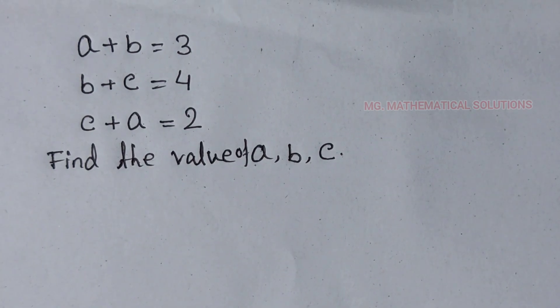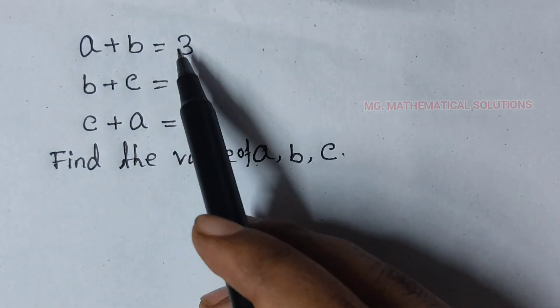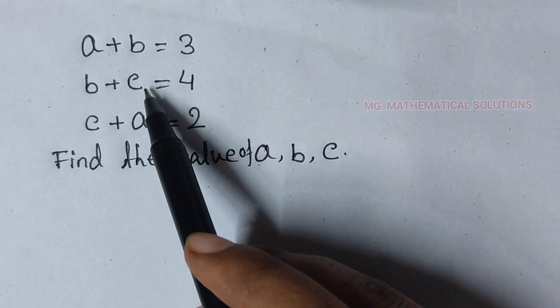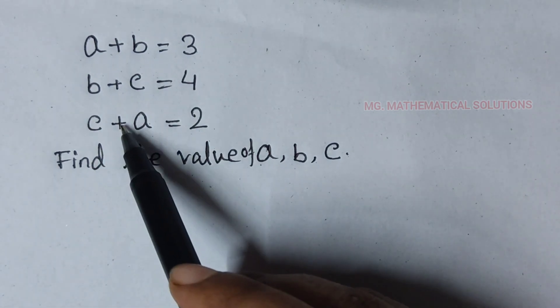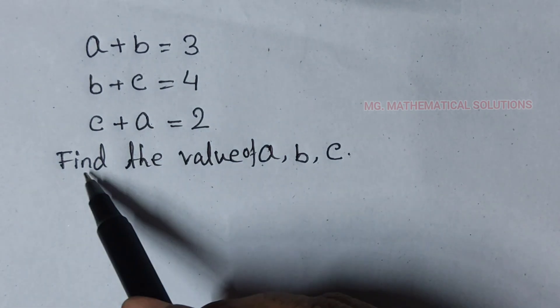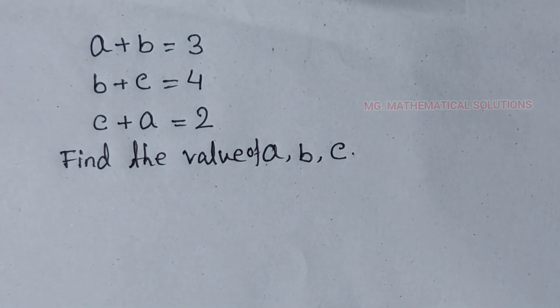We see the question. If a plus b equal to 3, b plus c equal to 4, and c plus a equal to 2, then find the value of a, b, and c.